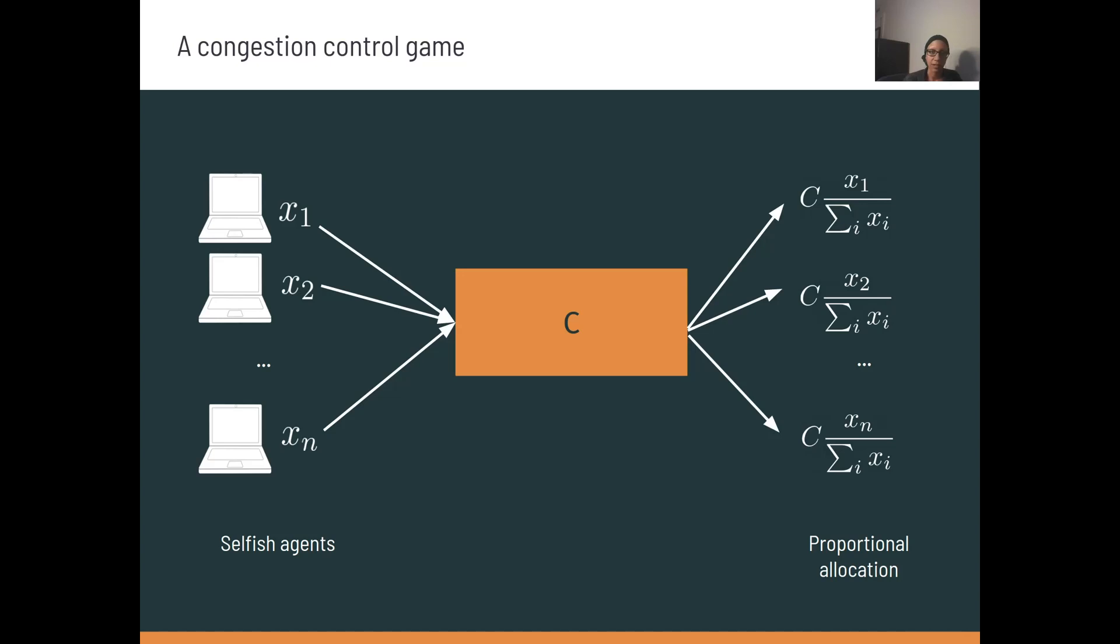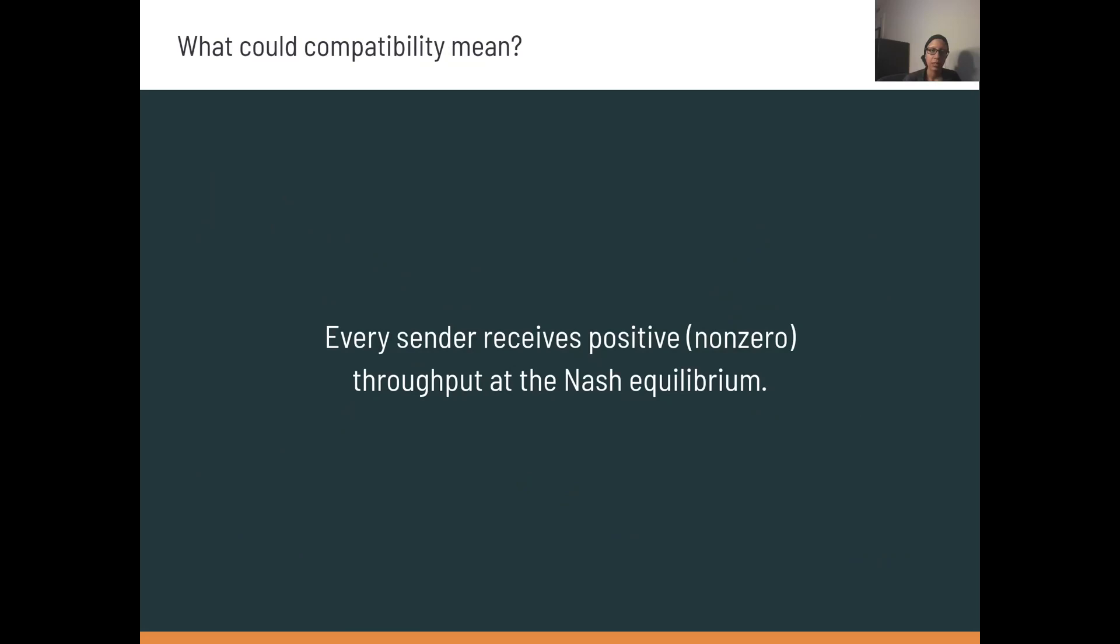And the router simply allocates bandwidth proportionally to each agent. That's what these expressions refer to. And agents also experience delay proportional to the total number of packets sent above the link capacity.